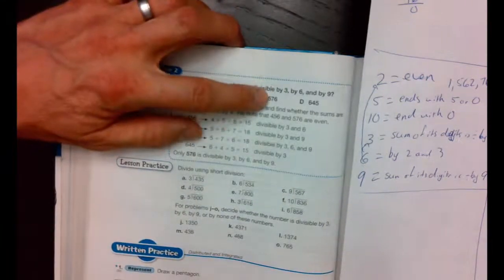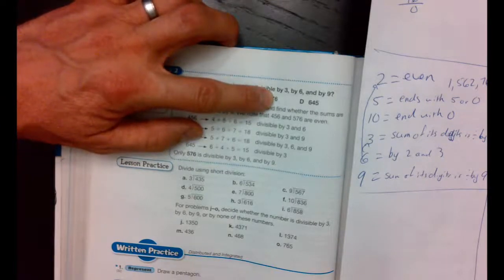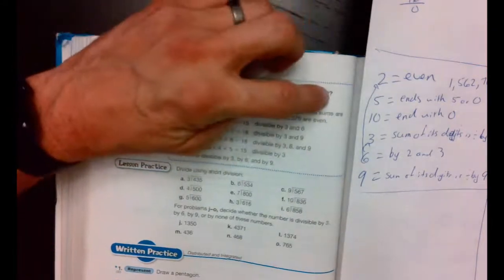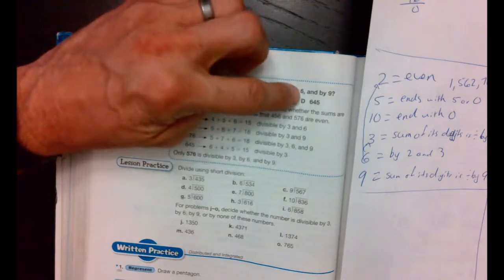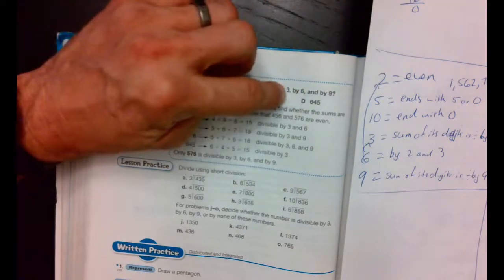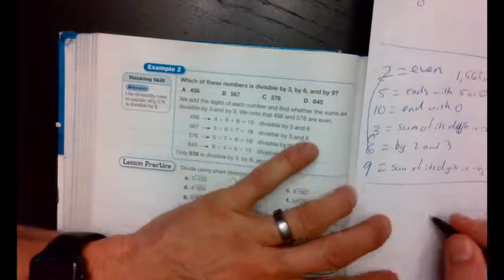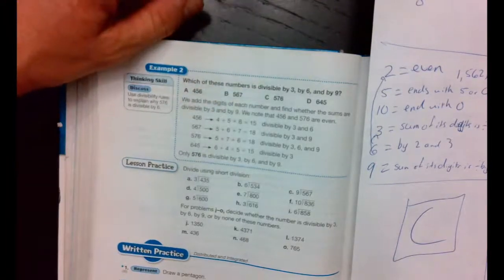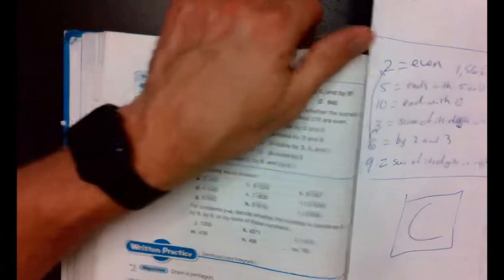5 plus 7 is 12, plus 6 more is 18. Is 18 divisible by 3? Yes. Is 18 divisible by 9? Yes. And is it divisible by 6? Well, to be divisible by 6, it's got to be divisible by 3, and it's got to be even. Is that an even number? Yes. Ding, ding, ding. C is our answer. Now, we could actually work all these out, but let's just use our divisibility rules. It's way easier.